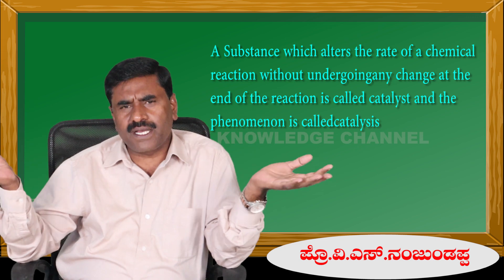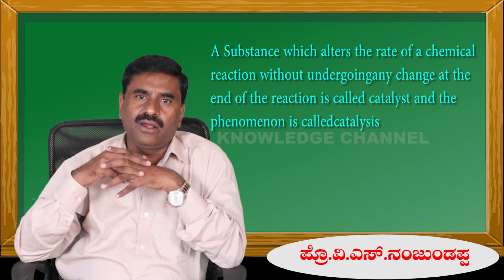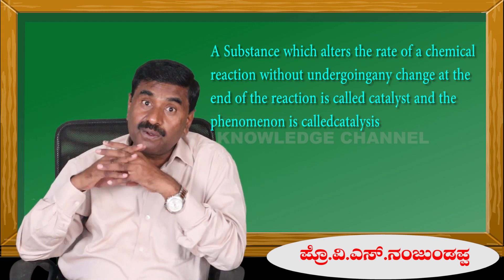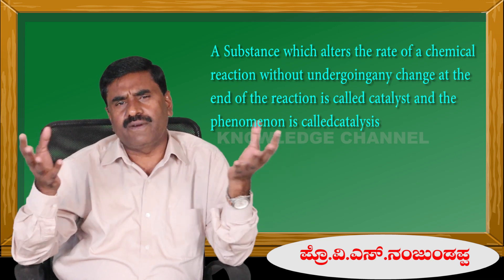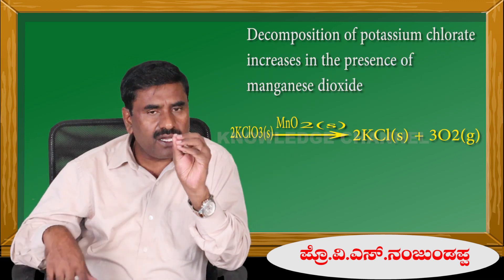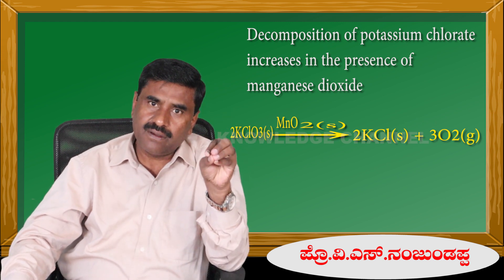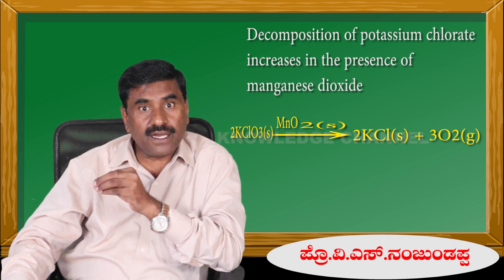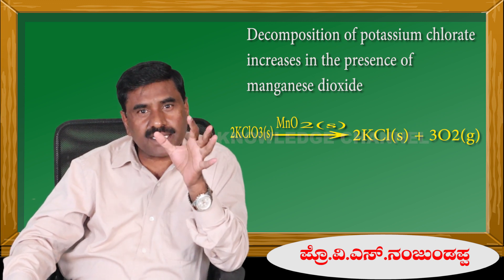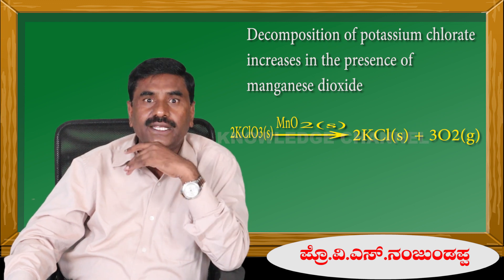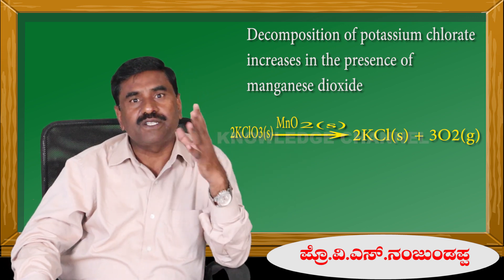There are so many chemical reactions — inorganic and organic — at the laboratory level or industry level. For example, consider the decomposition of potassium chlorate. If potassium chlorate decomposes, the reaction is immediate. That means manganese dioxide acts as a catalyst for the decomposition of potassium chlorate.